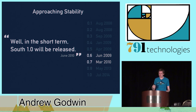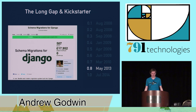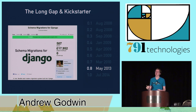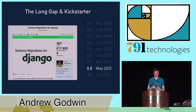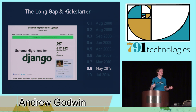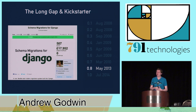Between 2010 and 2013, there were no major releases — I call it the long gap. At that point I had left university, I was in the world of work, I was freelancing, which is reasonably high stress. Then finally in May 2013, at DjangoCon Europe, I released 0.8, essentially a collection of bug fixes and a few new features that had accrued over the years. At the same time, I launched the Kickstarter. I asked for £2,500 and got almost £18,000. I'm very grateful to everyone who contributed.